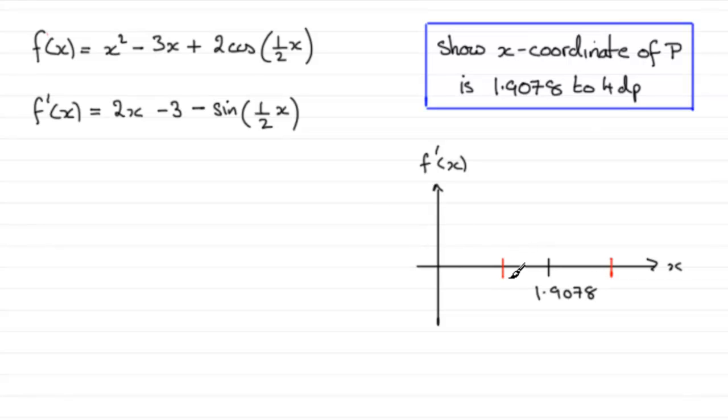The lower bound would be 1.90775, whereas the upper bound would be 1.90785. Admittedly, this would round up to the next one, but for the purposes of this question, we can use this value.